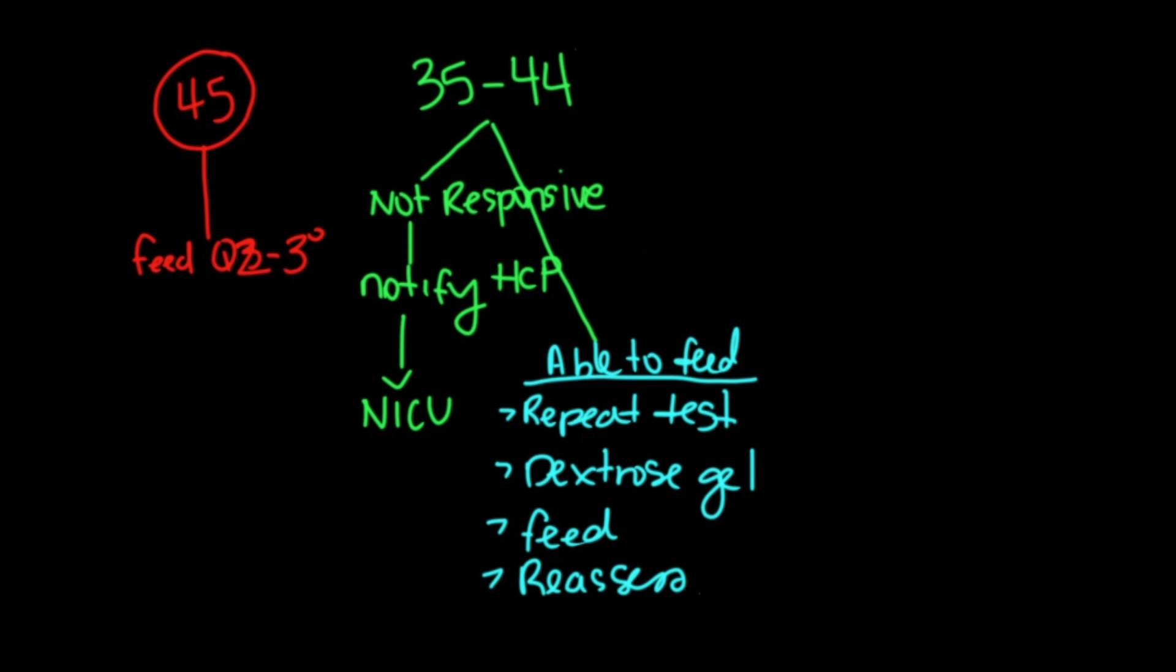However, let's say that your blood glucose was in the 34 range, that is very low. So you definitely want to notify your healthcare provider. And then definitely plan for transfer to NICU and consider most likely they're going to be doing the IV dextrose for baby.